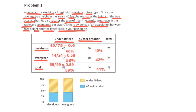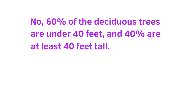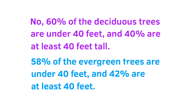Looking at the segmented bar graph, both the deciduous trees and the evergreen trees have a similar bar graph, which tells me there's no association between tree height and type of tree. So the answer is no: 60% of deciduous trees are under 40 feet and 40% are at least 40 feet tall, while 58% of evergreen trees are under 40 feet and 42% are at least 40 feet tall. Since these numbers are so similar, there is no association between tree height and tree type.